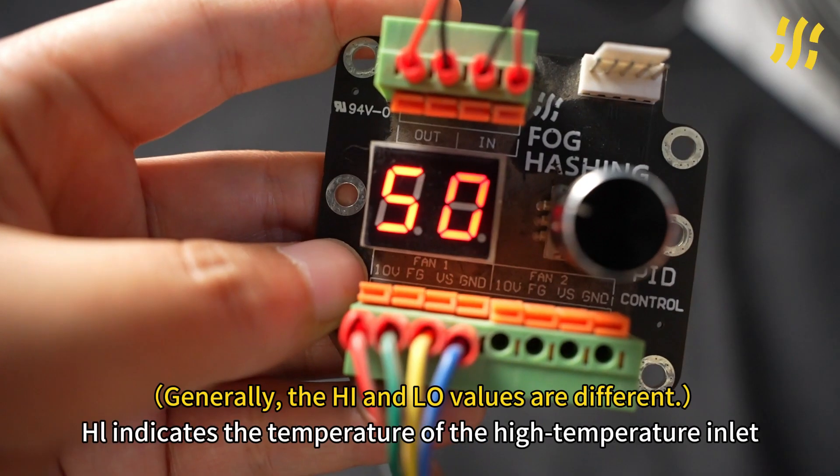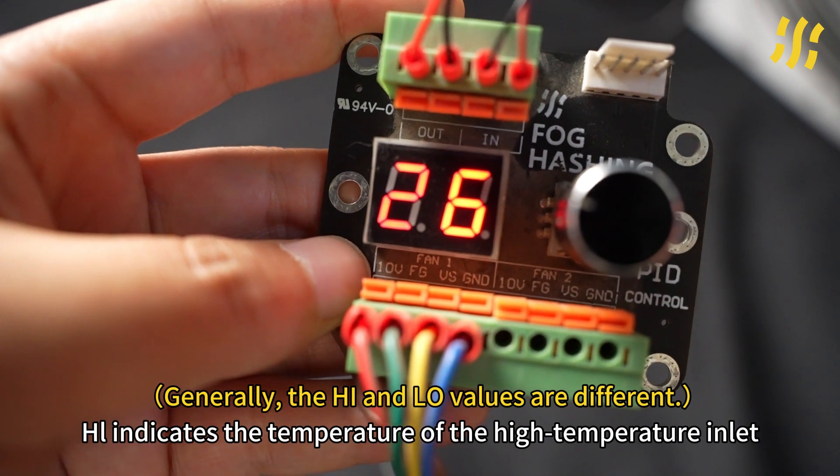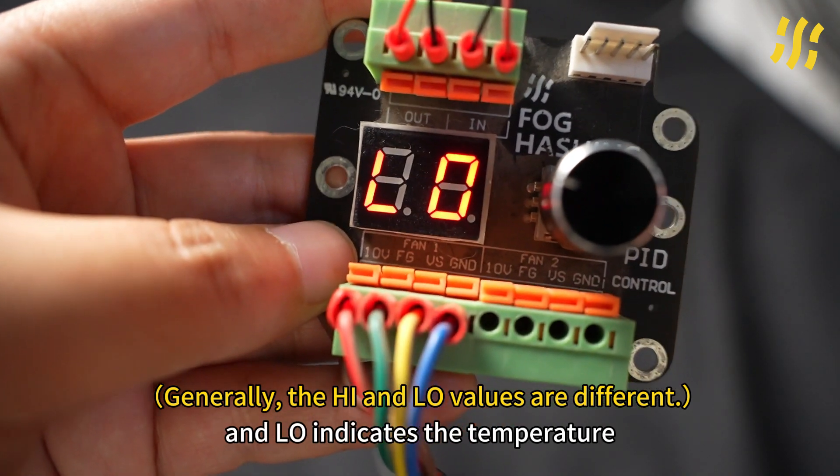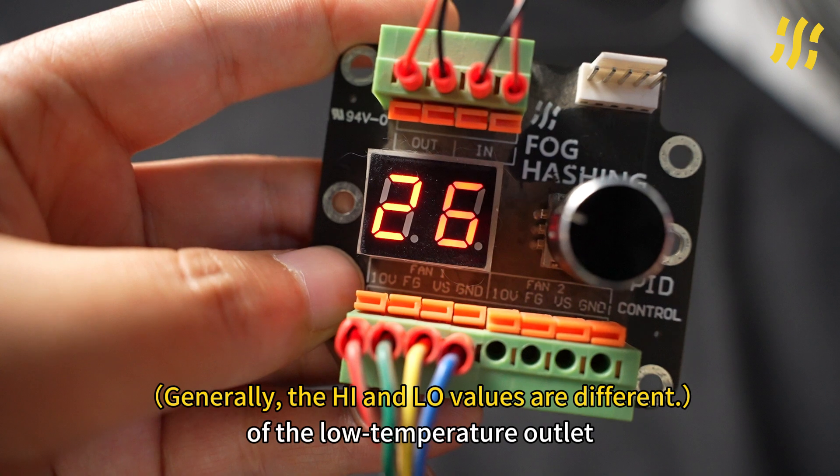Here, HL indicates the temperature of the high temperature inlet, and LOW indicates the temperature of the low temperature outlet.